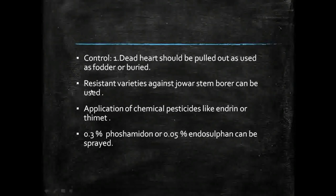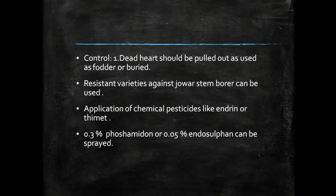Another control measure is to use resistant varieties against jawar stem borer. If the pest cannot be controlled otherwise, chemical pesticides such as endrin or thimet can be used. We can also apply 0.3 percent phosphamidon or 0.05 percent endosulfan to control this pest.